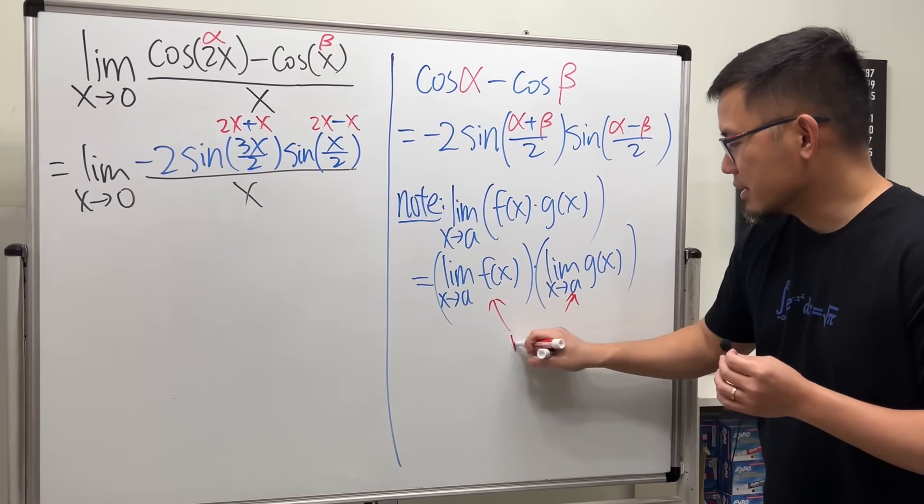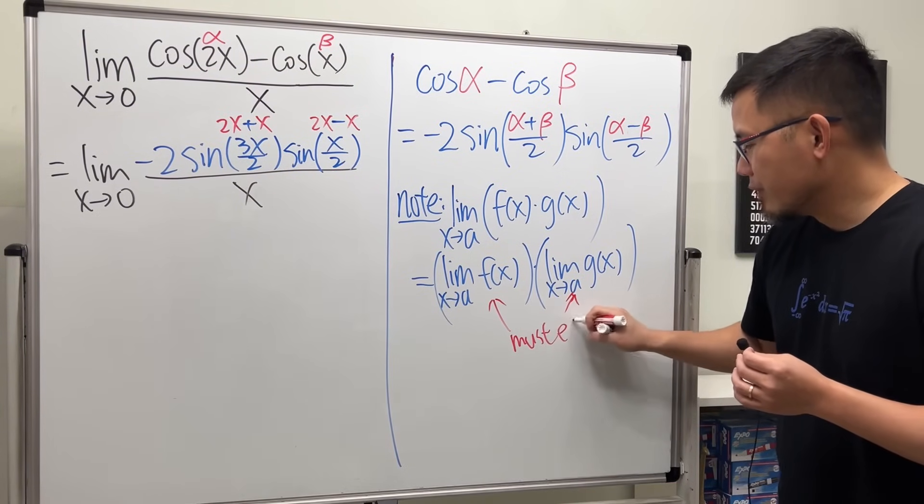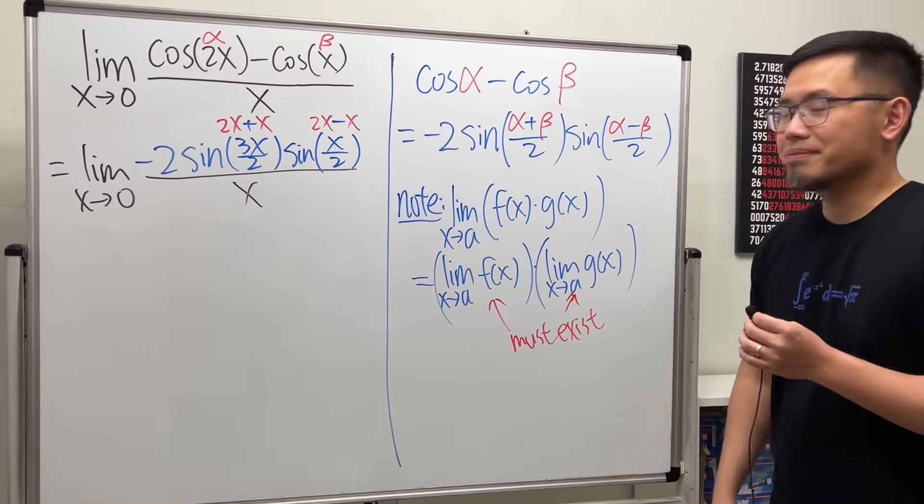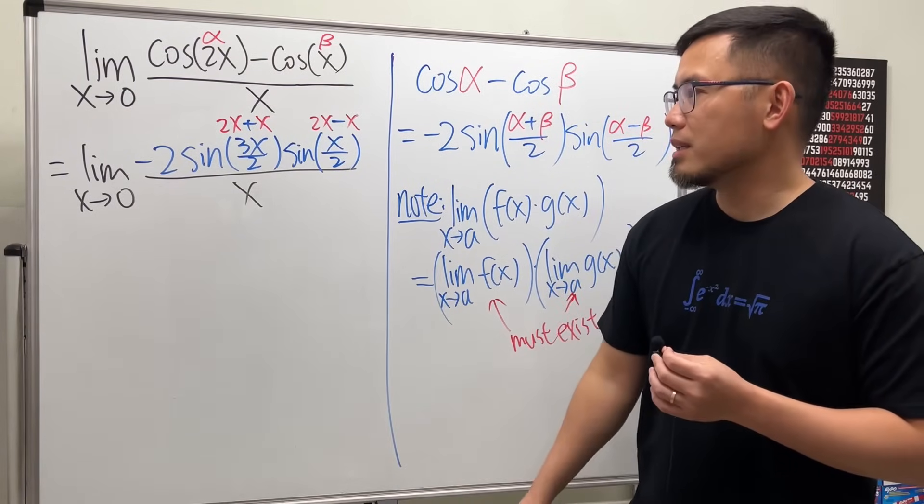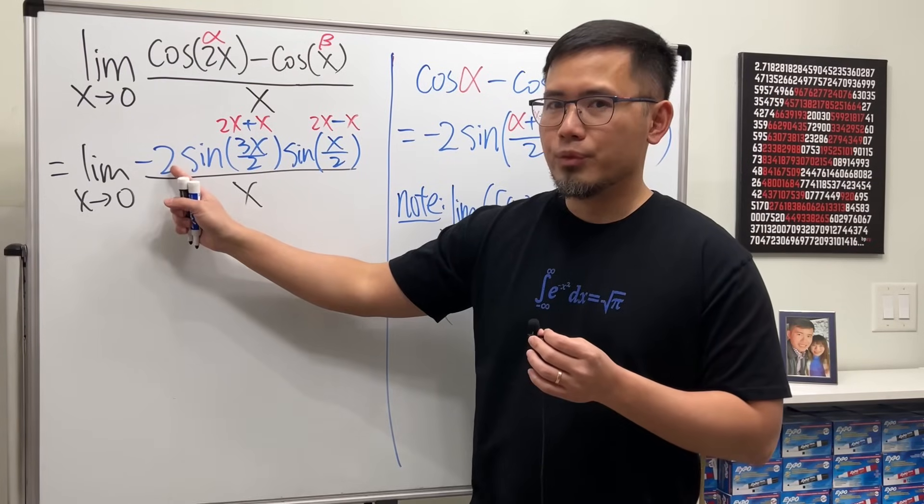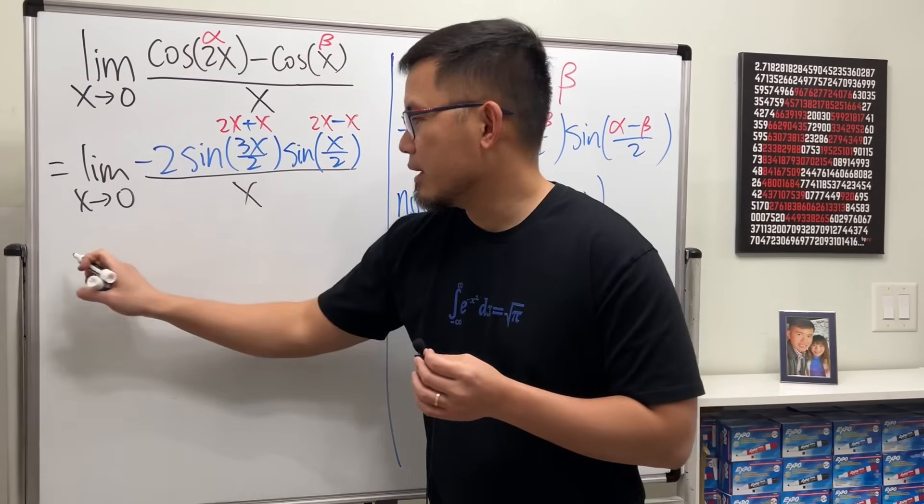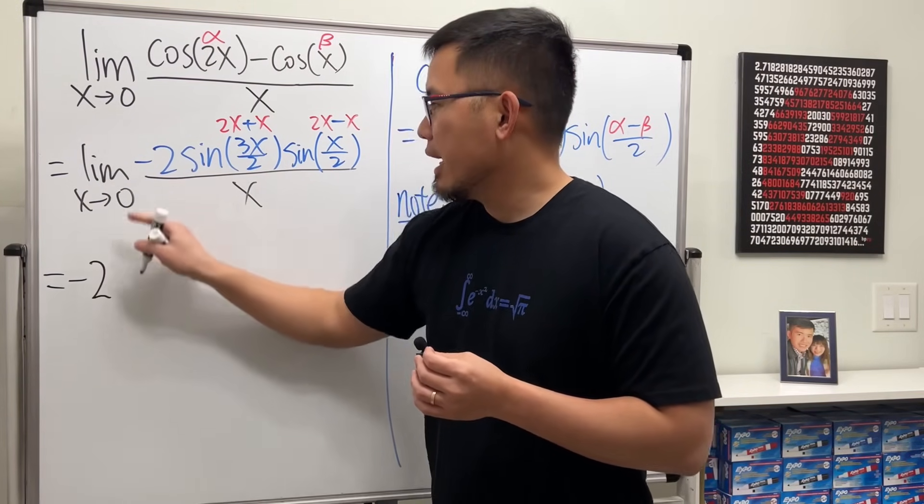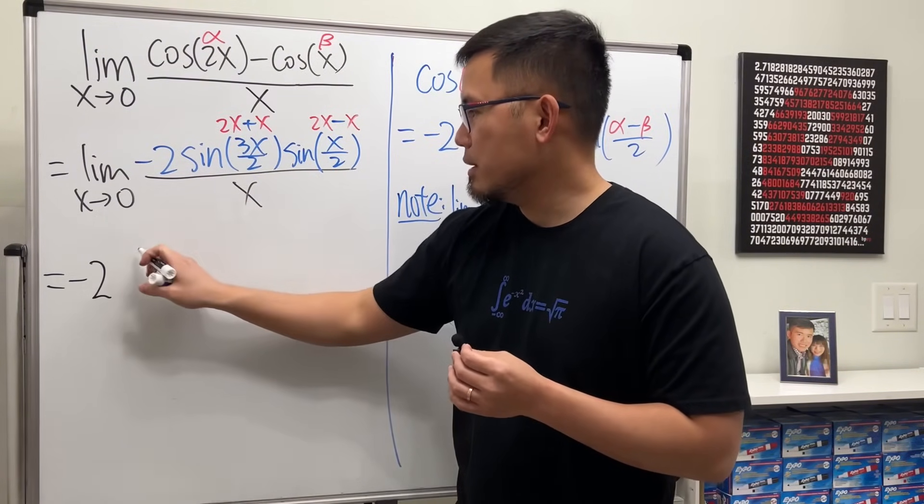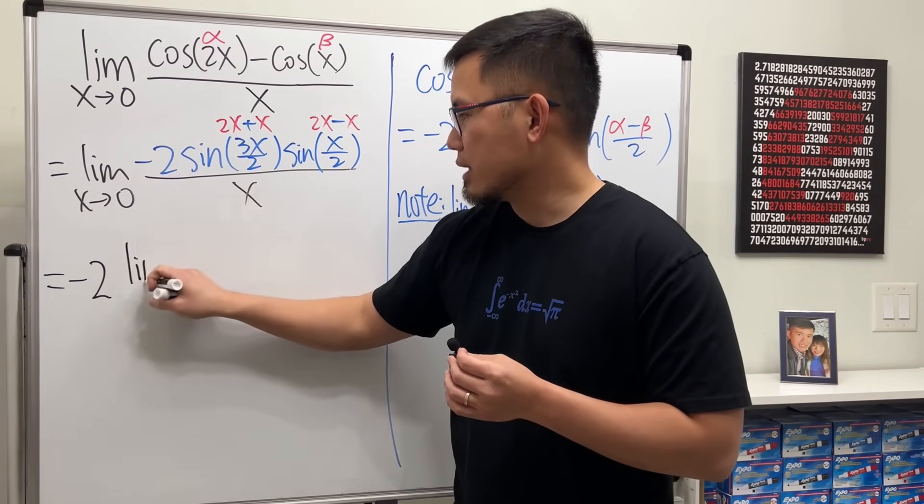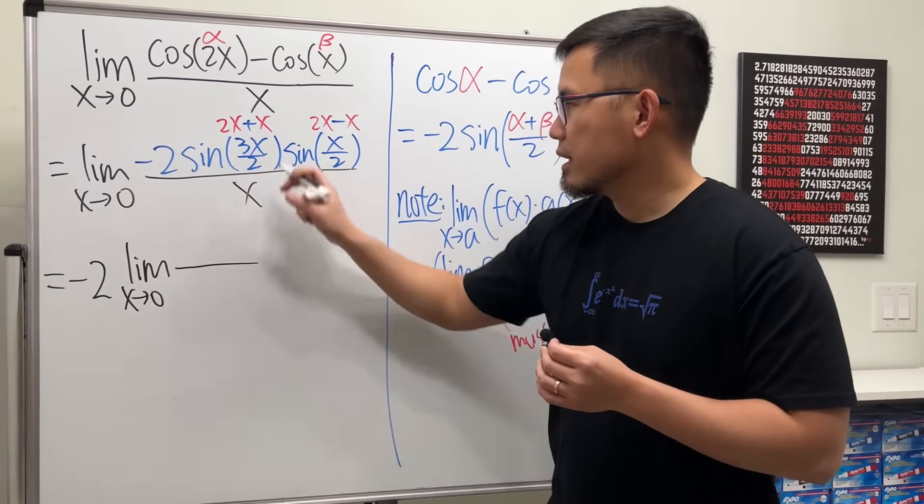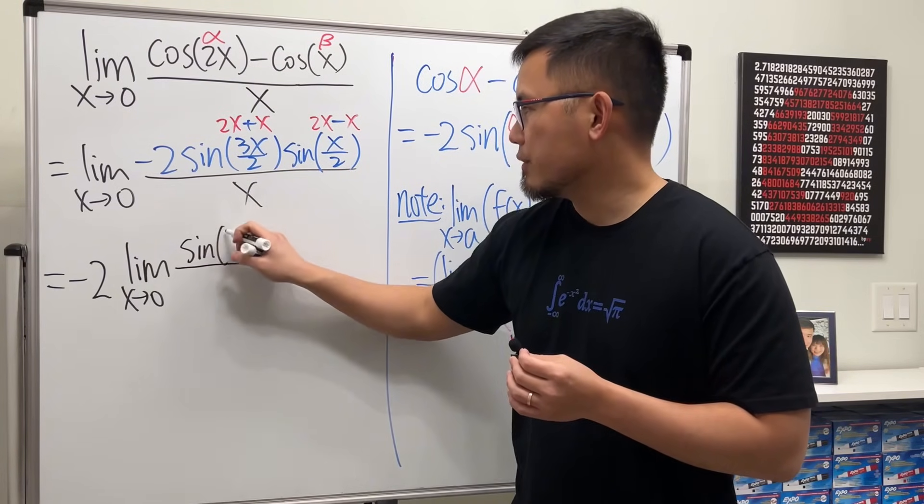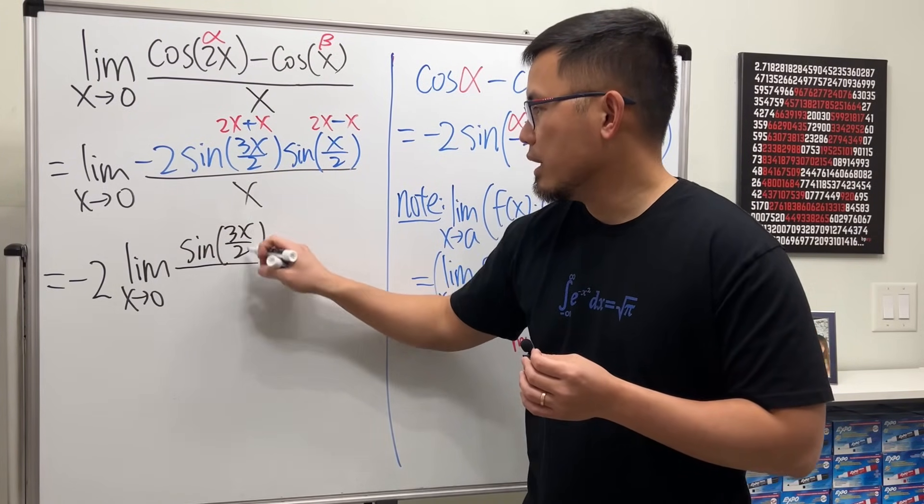So the truth is, we can actually just break it apart. Here we have a negative 2, we can put it on the outside, that's okay. So we will have negative 2, and then the limit of this thing first. So I'll just say let's take a look at the limit as x approaching zero of sine of 3x over 2, and let's just do it as over x.